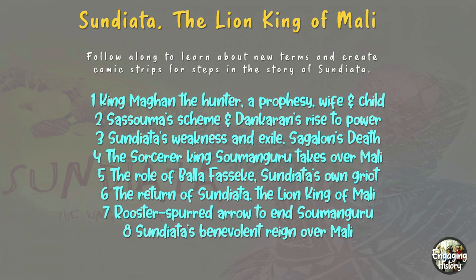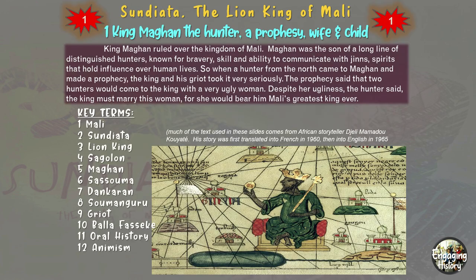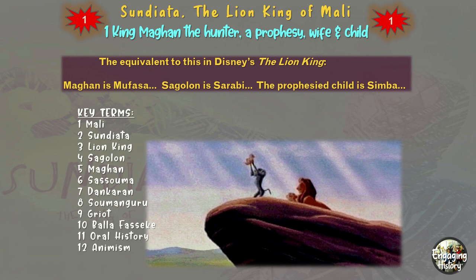Here are the eight titles we will use for each box. For box one, the text has been adapted from an African storyteller, a griot, from the 1960s. King Moghan ruled over the kingdom of Mali — he was the son of a long line of distinguished hunters known for bravery. There was a prophecy that he would marry a very ugly woman, and despite her ugliness, she was going to bear him Mali's greatest king ever. The three main characters introduced in Sundiata are easily connected to characters in The Lion King: King Moghan is Mufasa, Sagalan is Sarabi, and the prophesied child, Sundiata, is Simba.